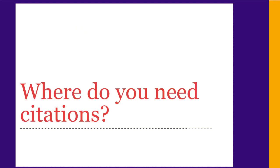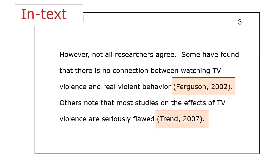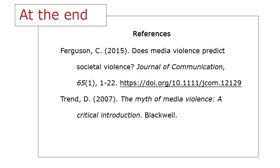First, where do you need to put citations? Citations come in two parts. The first part is in your paper, at the end of every sentence that uses ideas from a source. This lets readers know which source you used, and is called an in-text citation. The second part is at the end of your paper, where you give a list called References, which has all the sources with in-text citations in your paper.